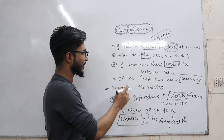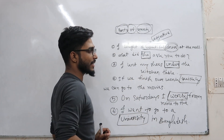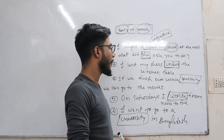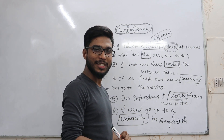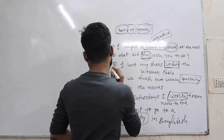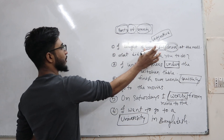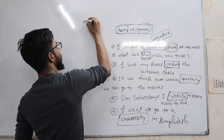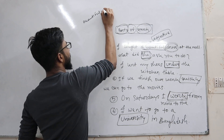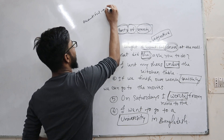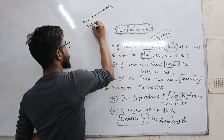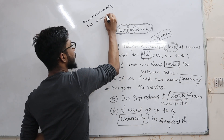Next: What did she ask you to do? Here, 'she' is a pronoun. And 'beautiful' — this is an adjective. This is the adjective.